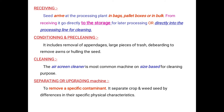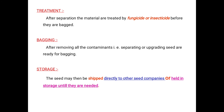The next step is separating or upgrading. Cleaning machines remove specific contaminants and separate crop and weed seeds by differences in their specific physical characteristics. After separation, the material is treated with fungicides or insecticides before being bagged. After removing all contaminants, the seeds are ready for bagging. Finally, seeds may be shipped directly to other seed companies or held in storage until needed.